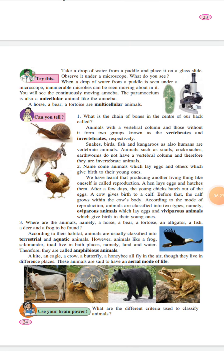See, on page number 24 there is again one activity. Take a drop of water from a puddle and place it on a glass slide. Observe it under a microscope. What do you see? When a drop of water from a puddle is seen under a microscope, innumerable microbes can be seen moving about in it.